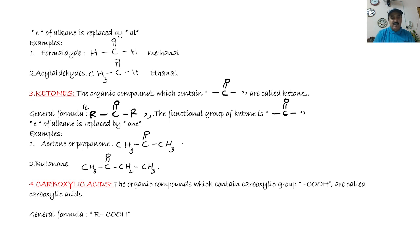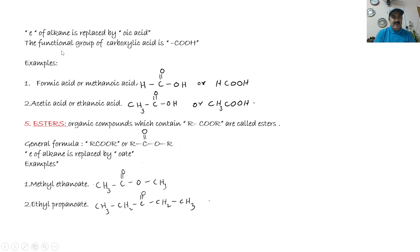Carboxylic acids are organic compounds which contain the carboxylic group, written as -COOH. Their general formula is R-COOH. For naming, the 'e' of the alkane is replaced by 'oic acid'. For example, H-C(=O)-OH is formic acid in the common system. It has one carbon, so the IUPAC name is methanoic acid — the 'e' of methane is replaced by 'oic acid'.